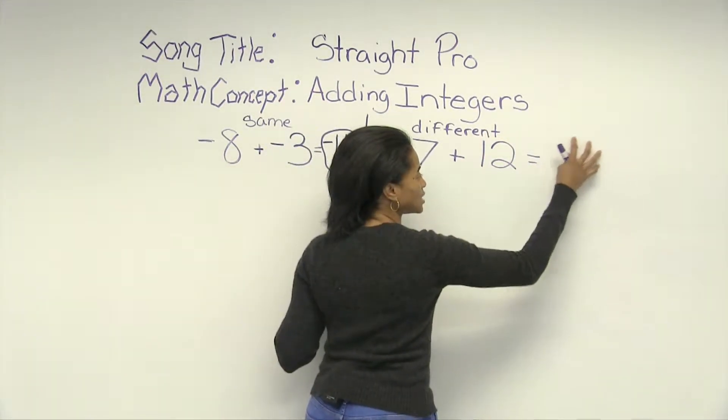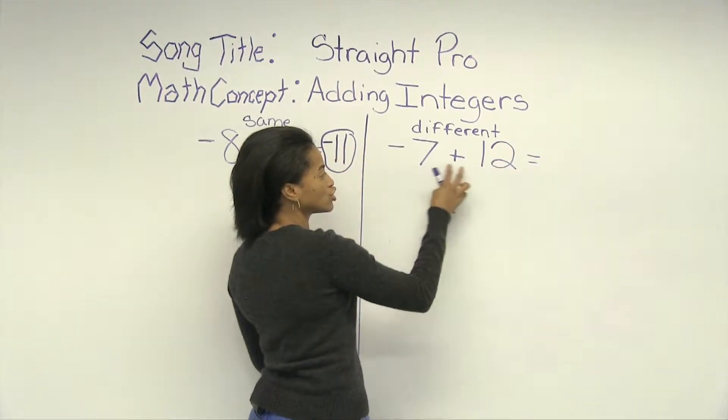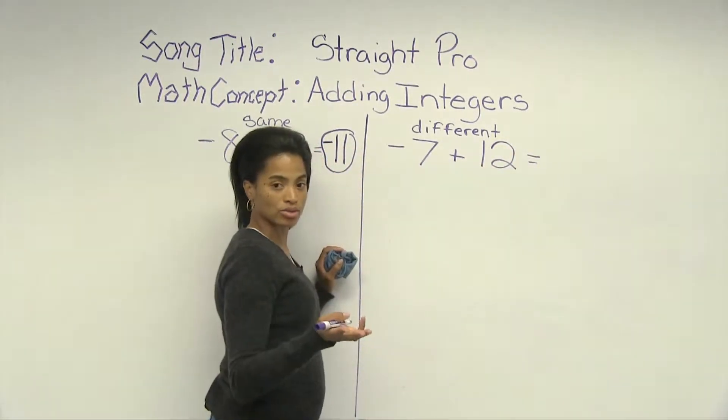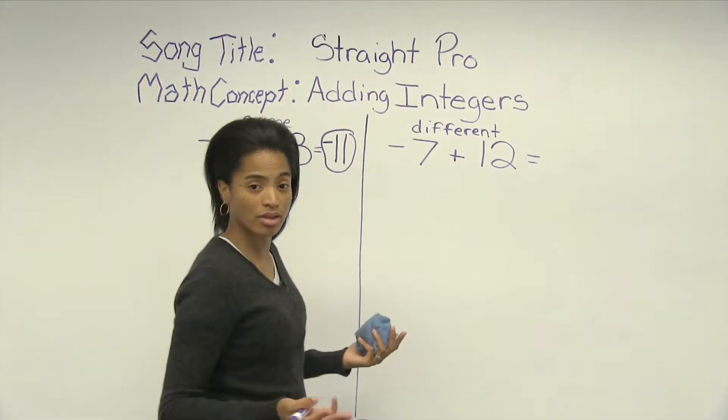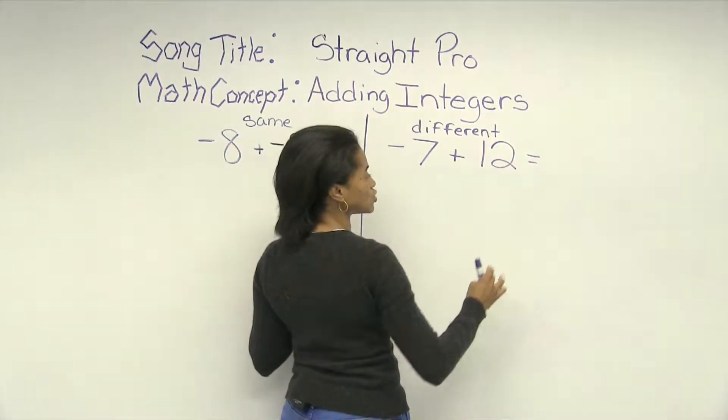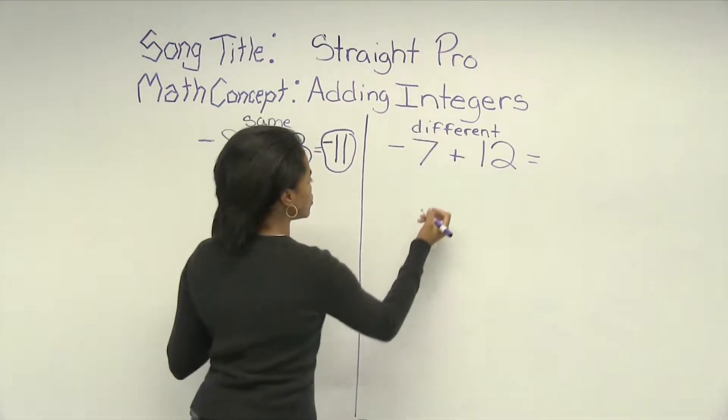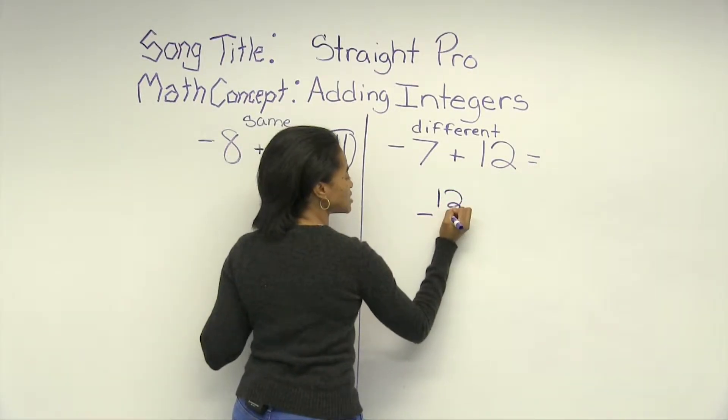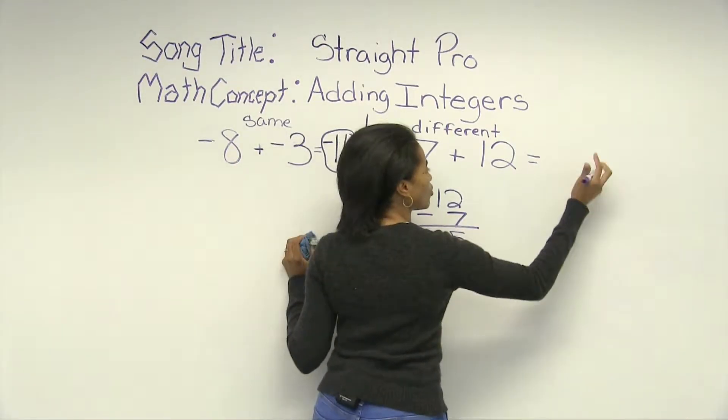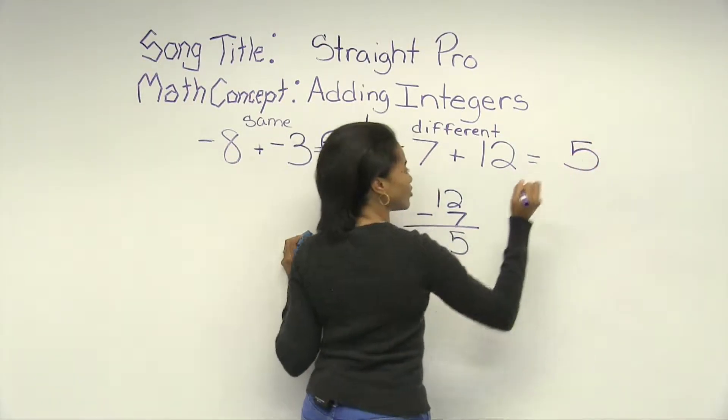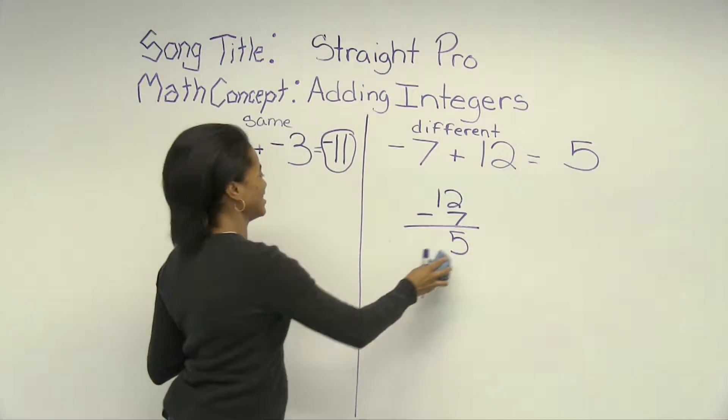So the sum will be positive, and then we want to subtract the absolute values of these two. So the absolute value of negative seven is just seven. Absolute value of positive 12 is just 12. So do 12 minus 7. And so that tells you that sum will be positive 5. Got it?